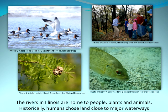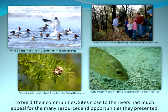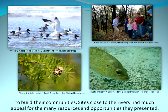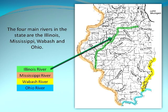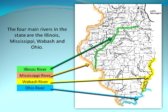The rivers in Illinois are home to people, plants, and animals. Historically, humans chose land close to major waterways to build their communities. Sites close to the rivers had much appeal for the many resources and opportunities they presented. The four main rivers in the state are the Illinois, Mississippi, Wabash, and Ohio.